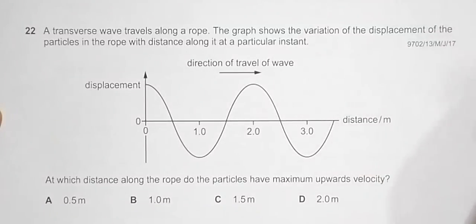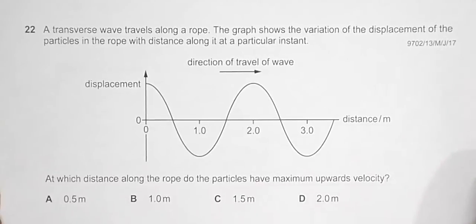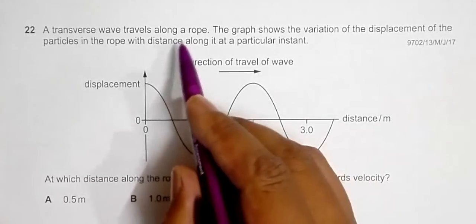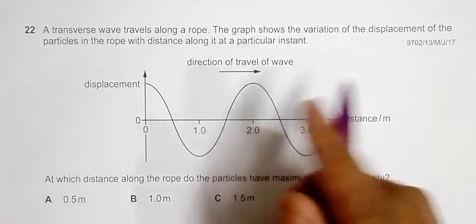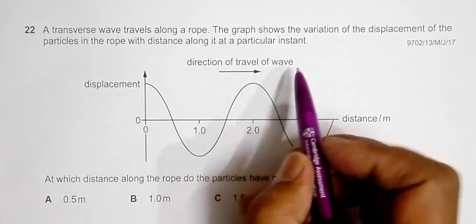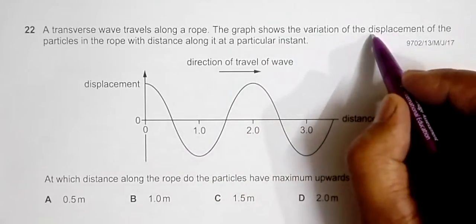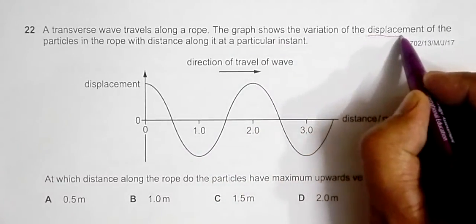This question belongs to 2017 May June paper 13, question number 27. A transverse wave travels along a rope, and we have shown the direction of travel of the wave. The graph shows the variation of the displacement of the particles of the rope with distance along it at a particular instant.